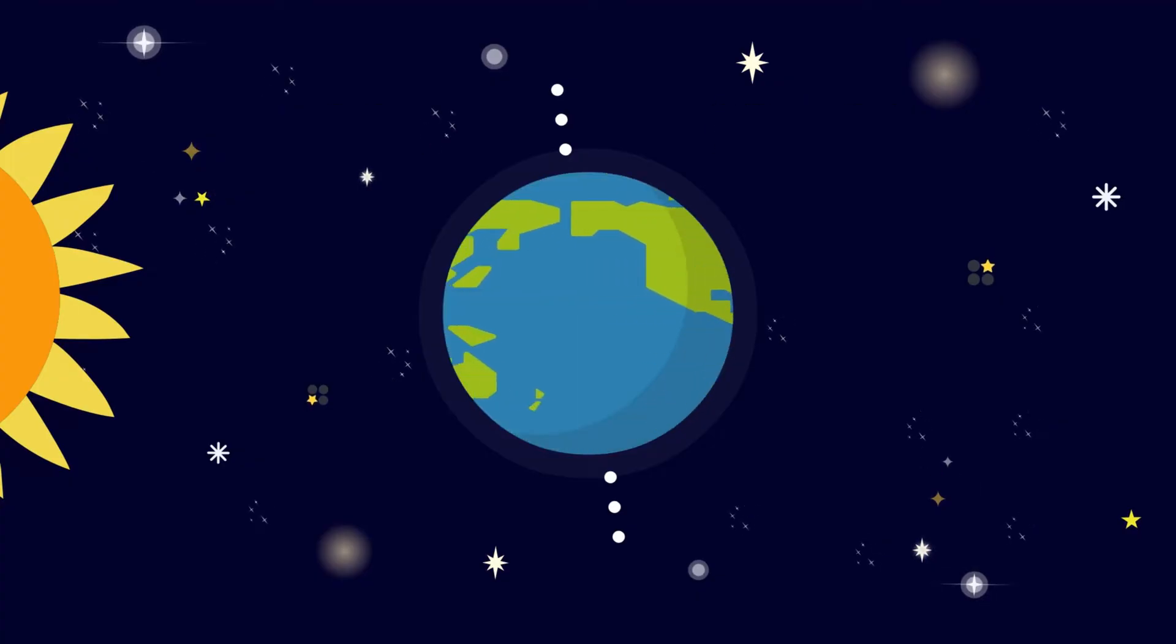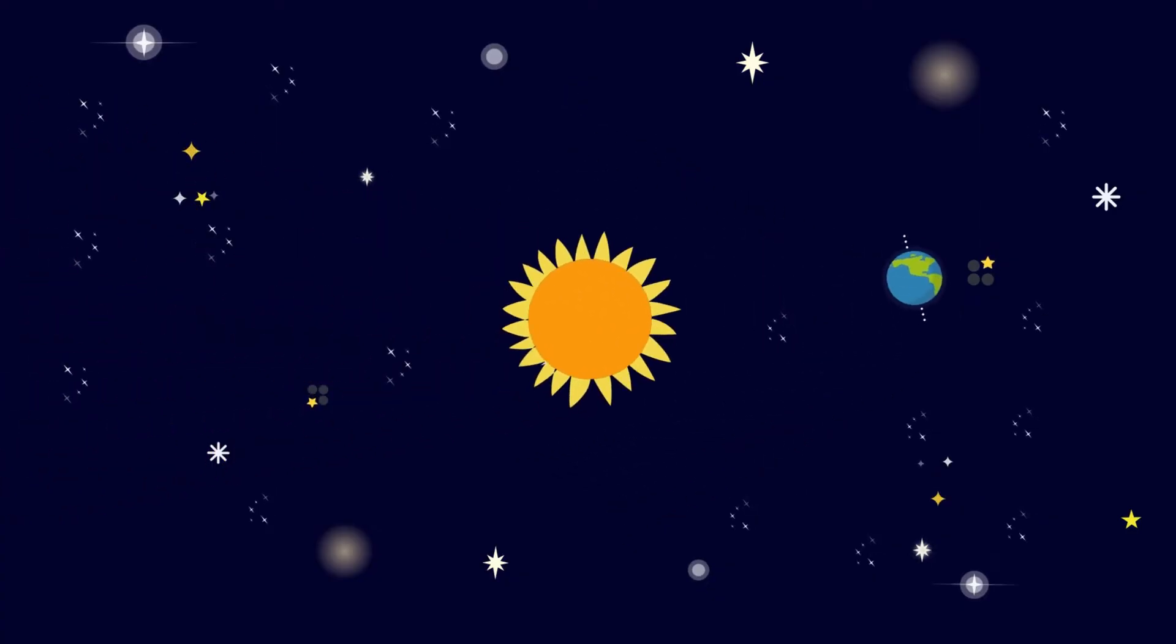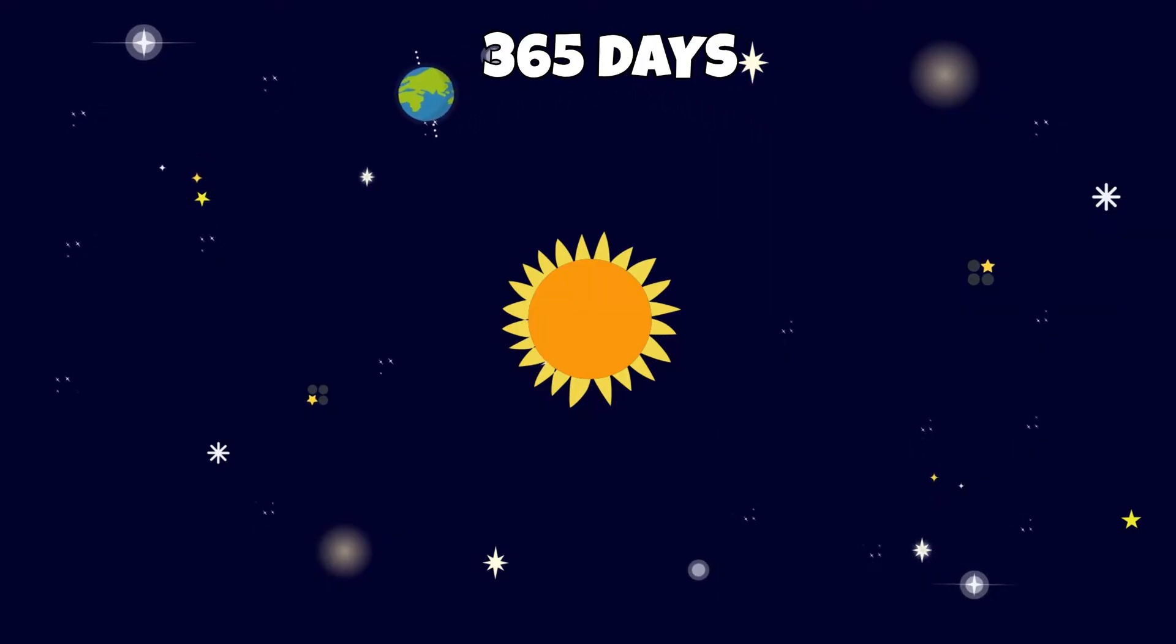The Earth is not only rotating on its axis, but it is also continuously revolving and orbiting around the sun. It takes the Earth approximately 365 days to complete one revolution and go around the sun one time. This is what we know as a calendar year.